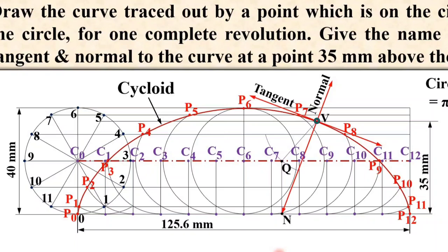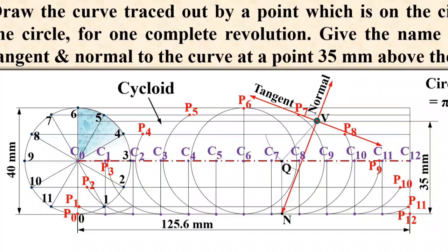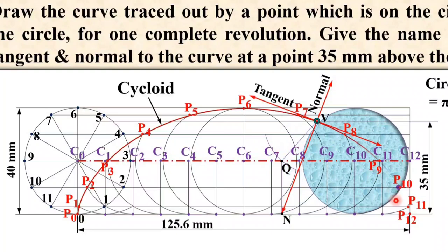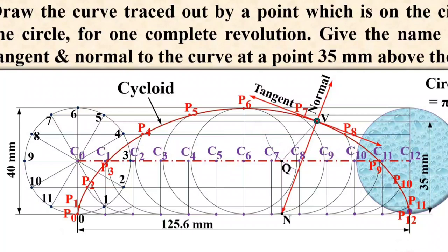Keep in mind that in the examination, the cycloid, normal and tangent should be drawn dark. The rest of the construction lines must be as light as possible. Once again, look at the concept of cycloid — this is the rolling circle rolling and generating the cycloid. This concept will be very useful for epicycloid and hypocycloid, which we are going to see in the next video.